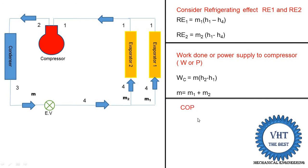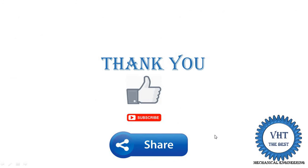The COP equals total refrigerating effect divided by work done. The total refrigerating effect is the summation of R1 plus R2 from the two evaporators. Divide this by the work done value to find the COP. Thank you for watching this video — if you learned something, please subscribe to my channel and share with your friends.